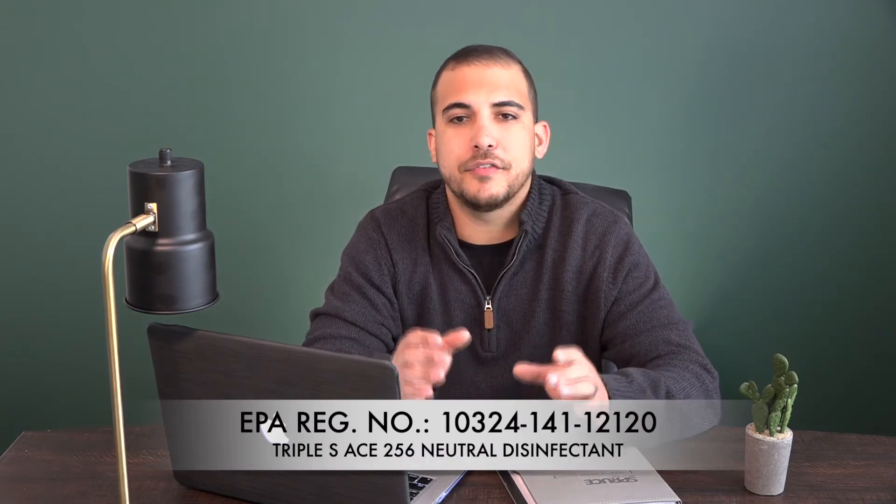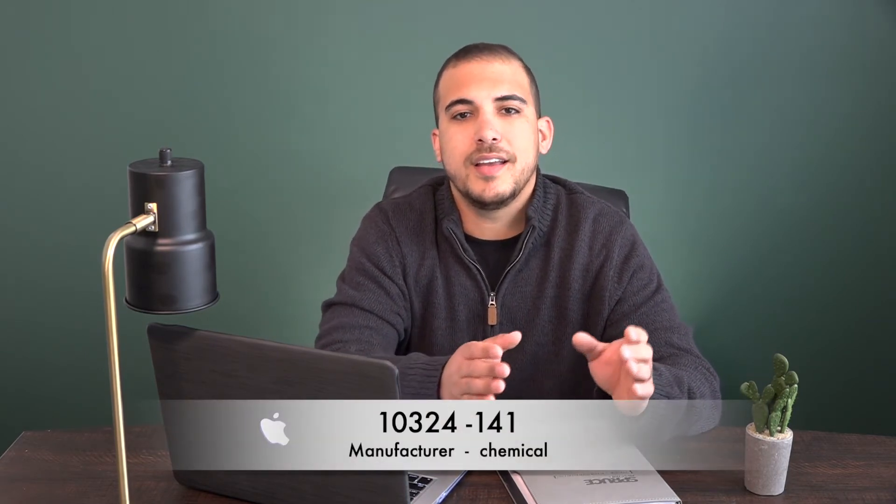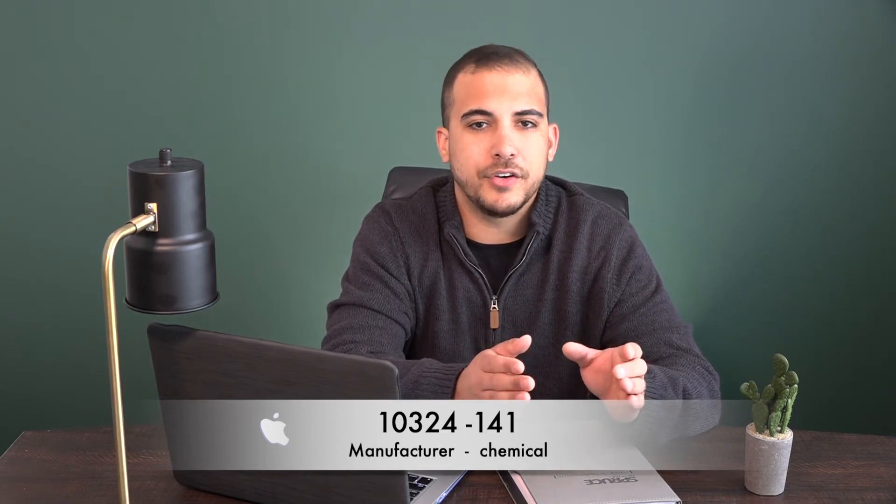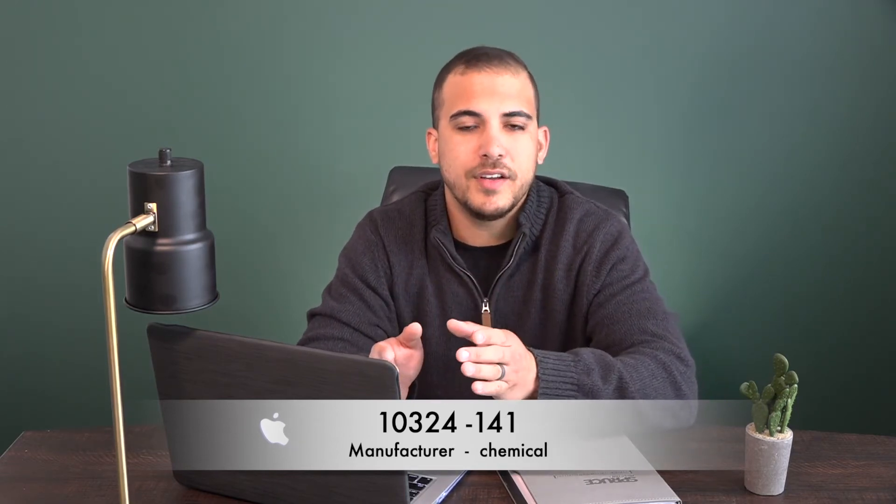List N includes products that meet EPA's criteria for use against SARS-CoV-2, the cause of COVID-19. An important thing to note before we plug this in: when you have an EPA registration number with three different groupings of numbers, you're going to use only the first two groups — the manufacturer in the first group and the chemical itself in the second group. We're going to find out if the ACE256 carries the kill claims for COVID-19.